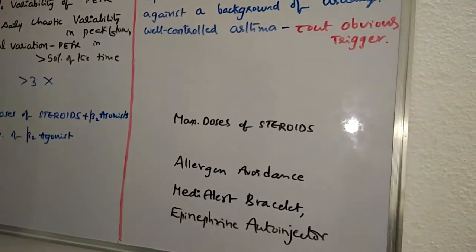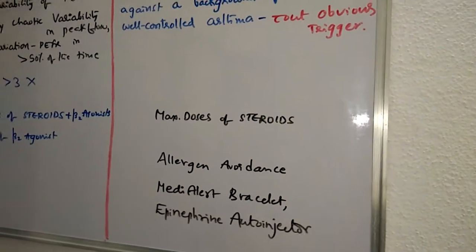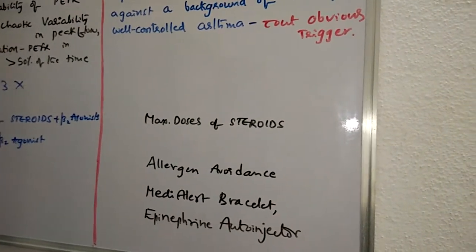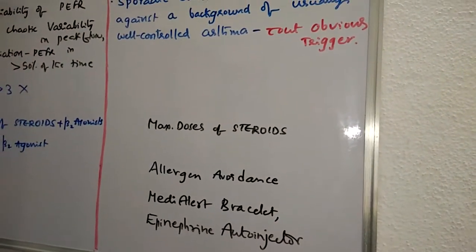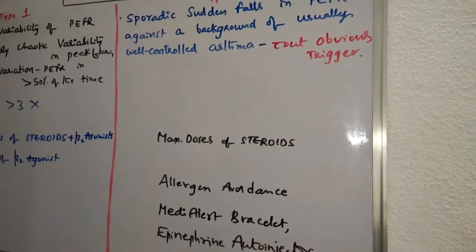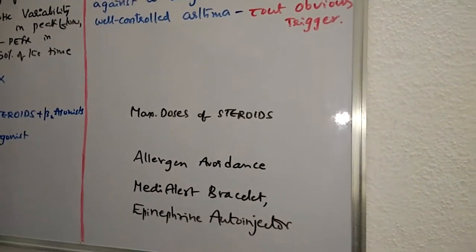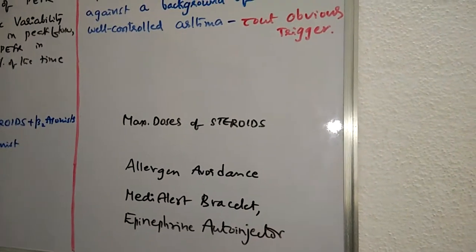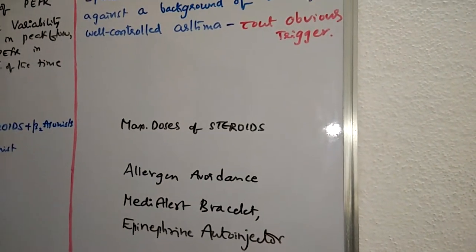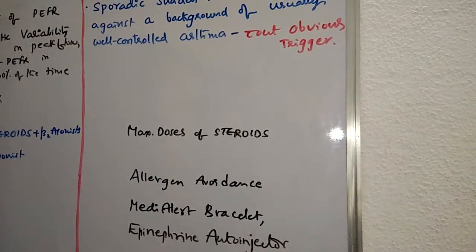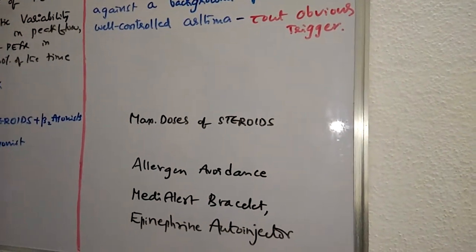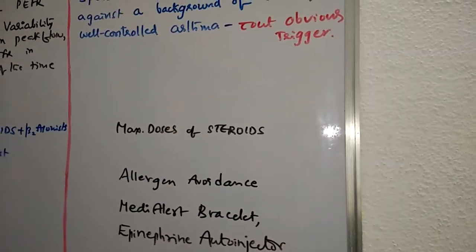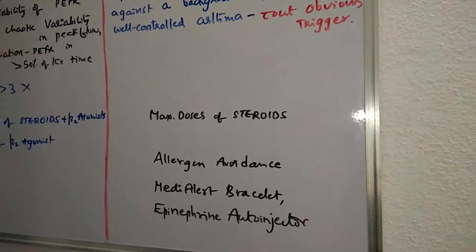Coming to treatment of type 2 brittle asthma: maximum dose of steroids either oral or inhaled and self-management approaches, allergen avoidance. In type 2 brittle asthma, since catastrophic attacks are unpredictable, patients may display identification of the issue such as medic alert bracelet or carry an epinephrine auto-injector to prevent the sudden attacks.